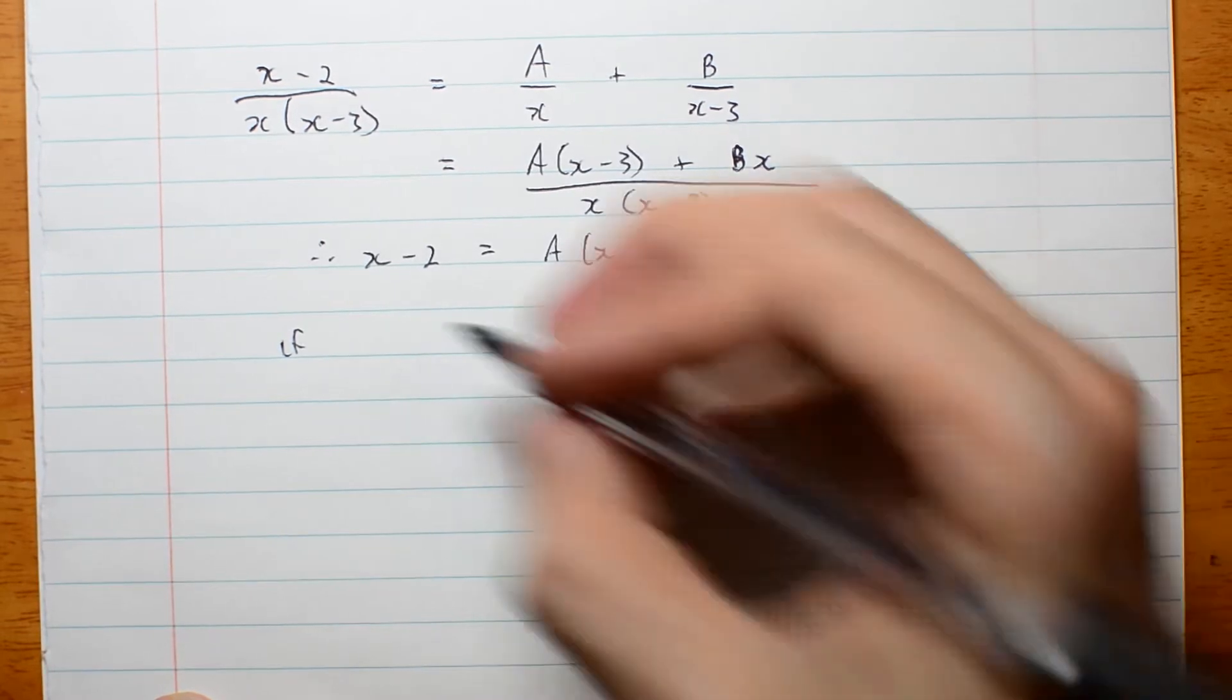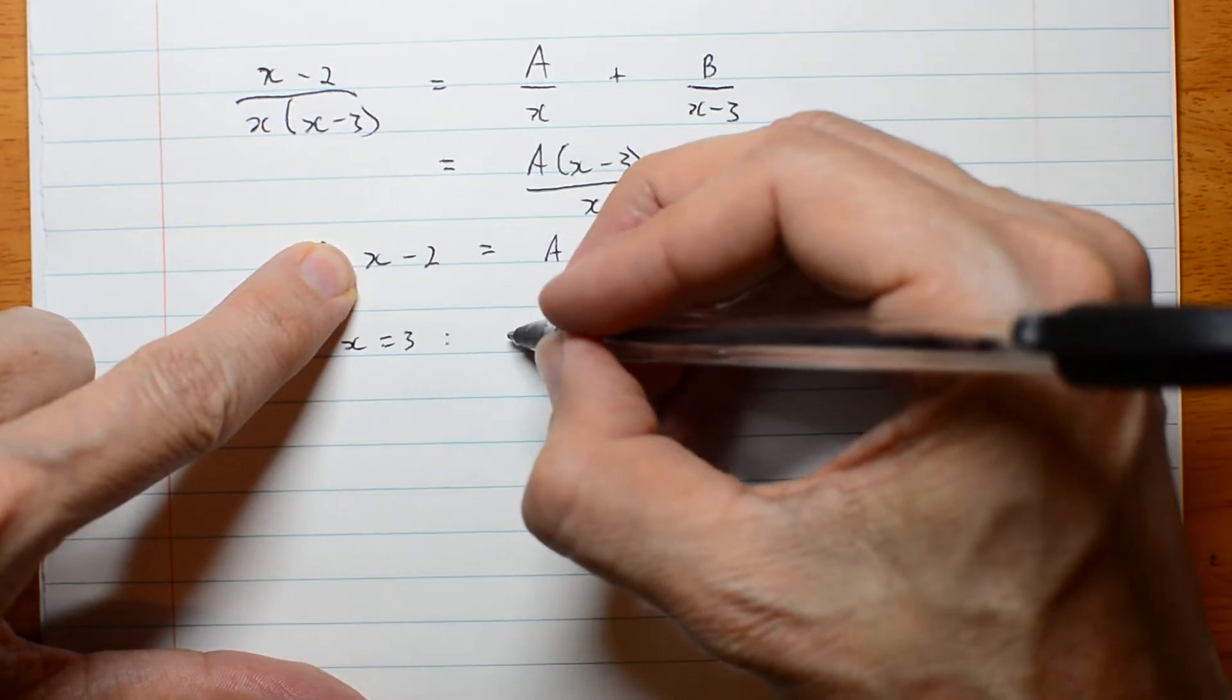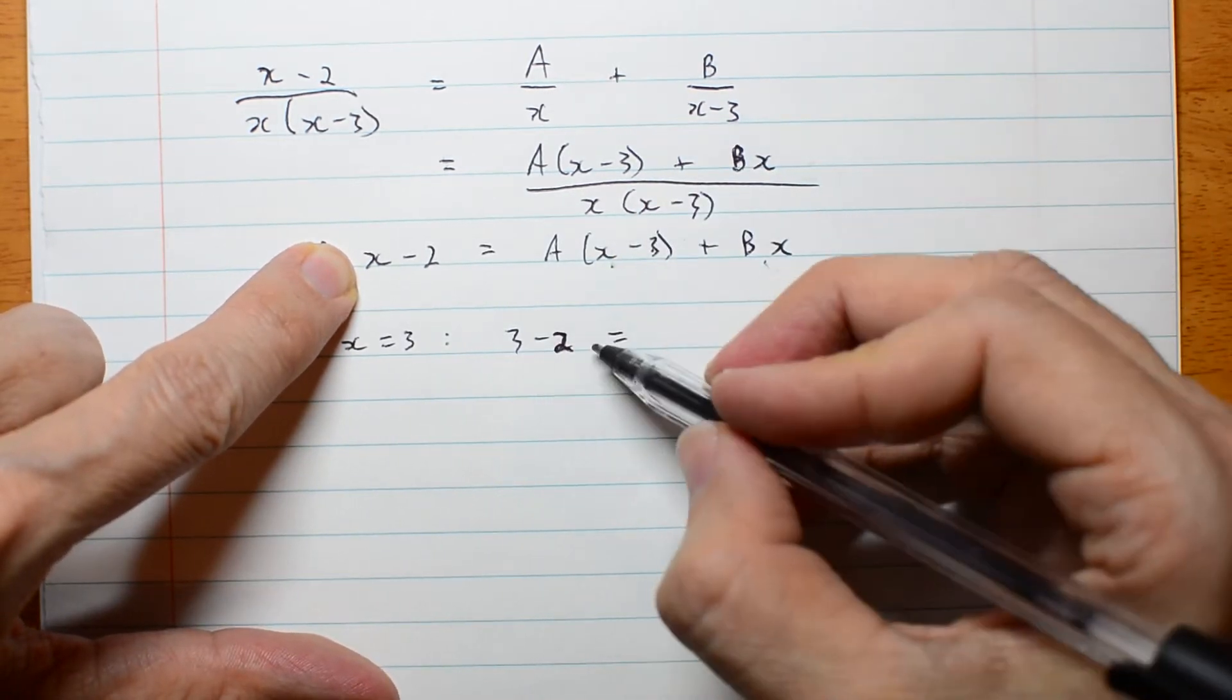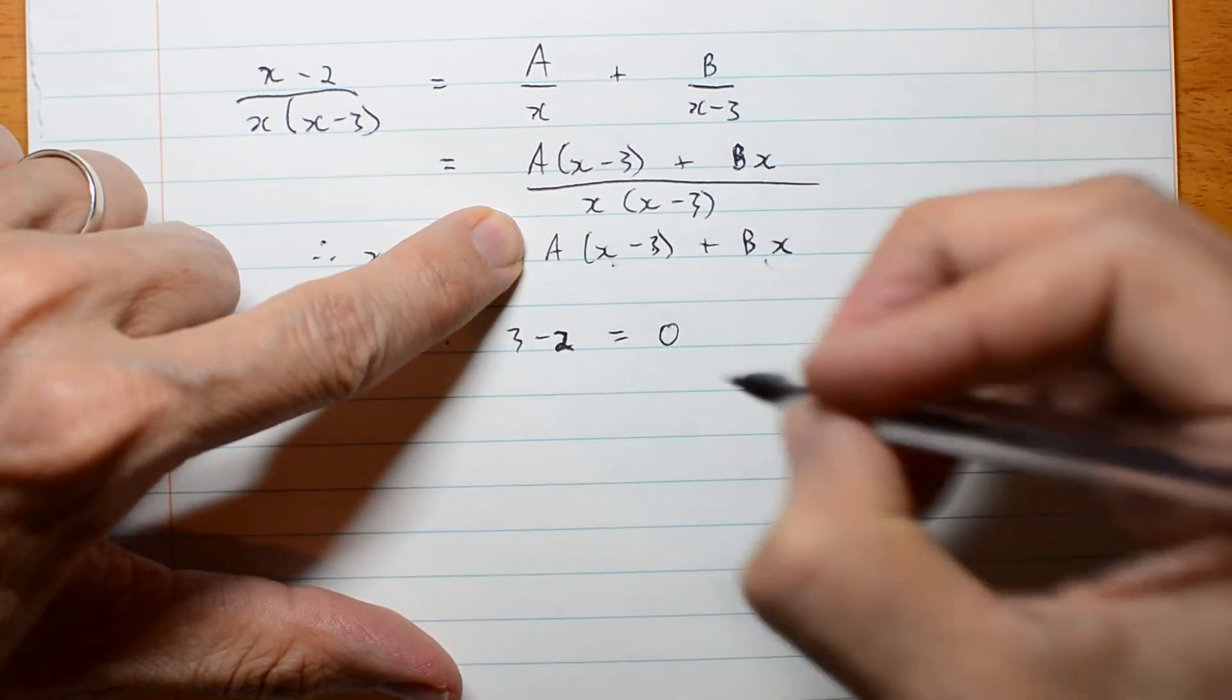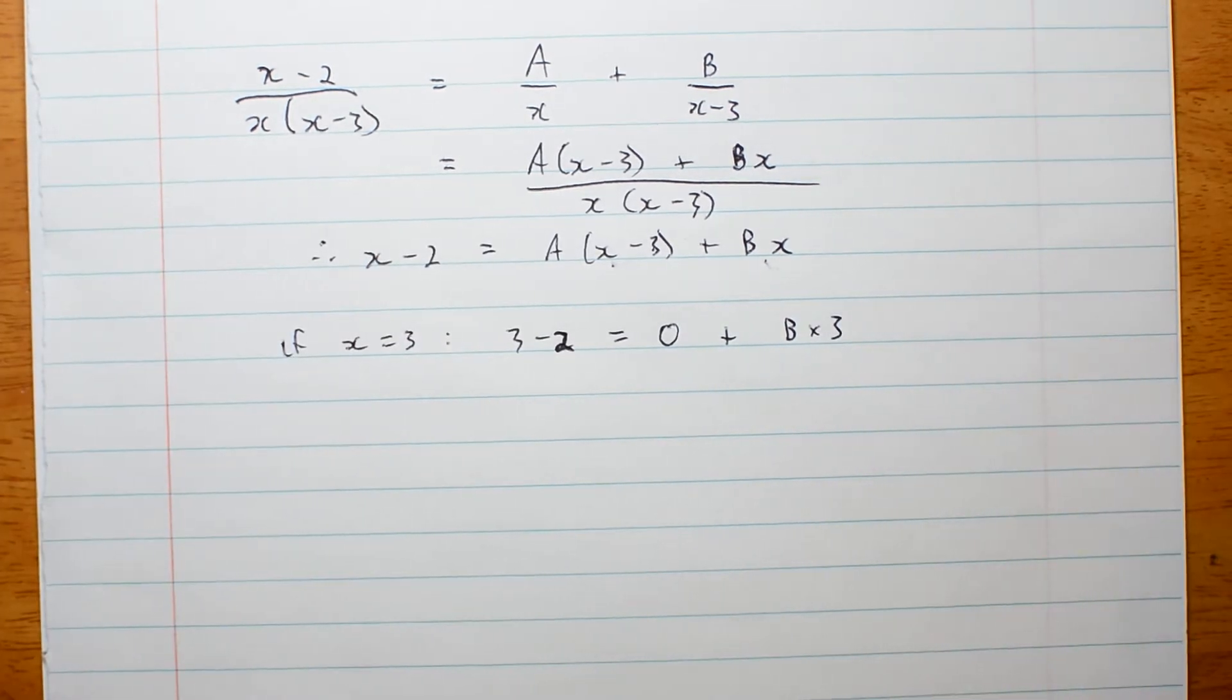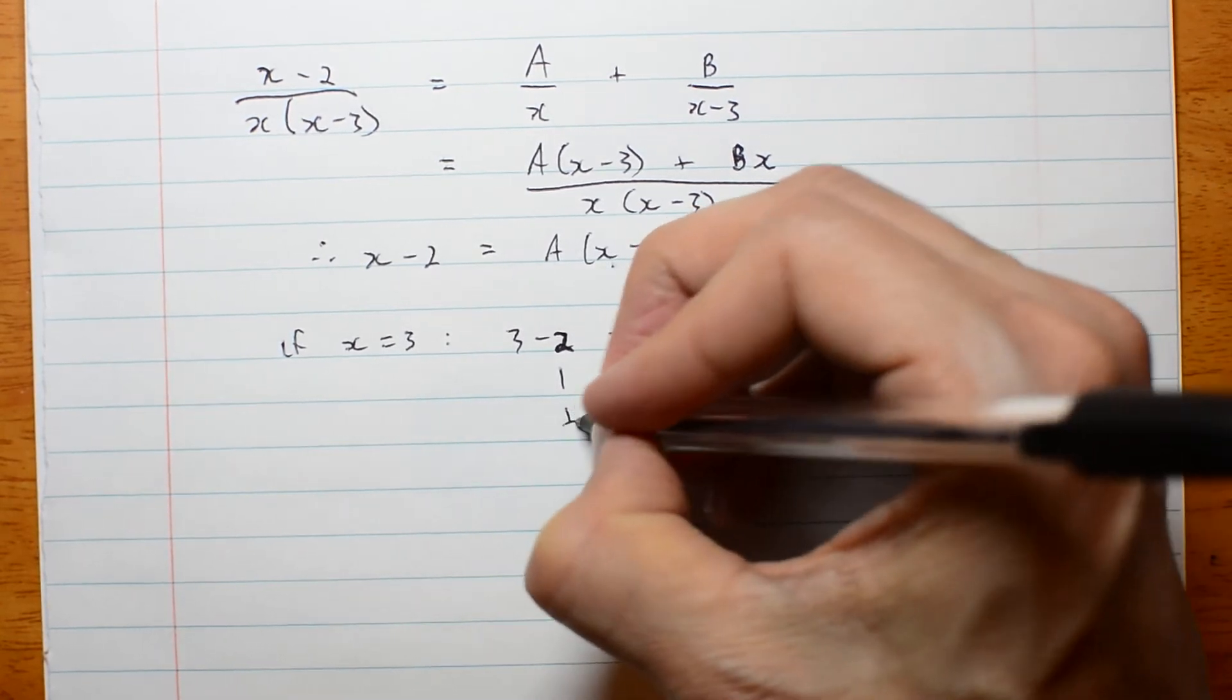So, if x is 3, this goes away. If x is 3, I have 3 take 2, I'm going to write it all out again until you're all comfortable with it. And 3 take 2 is, this one's going away, plus b times 3. Well, that means 1 equals 3b, and b is a third.